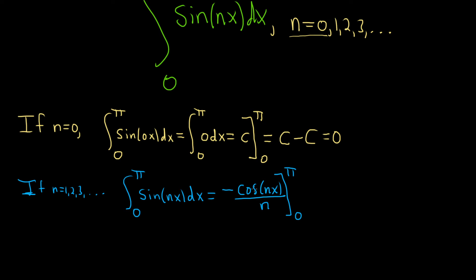You can check this via differentiation. If you differentiate the cosine of nx, you have to use the chain rule. You would get negative sine x times the derivative of the inside, which is n. The n's cancel and the negatives become positive, giving you back the original integrand.